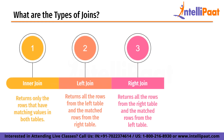Moving on to right join — right join returns all the rows from the right table and the matched rows from the left table. If there are no matching rows in the left table, then null values are returned for the left table columns. It is the reverse of a left join and is useful when you want to include all the data from the right table even if there are no matching rows in the left table.